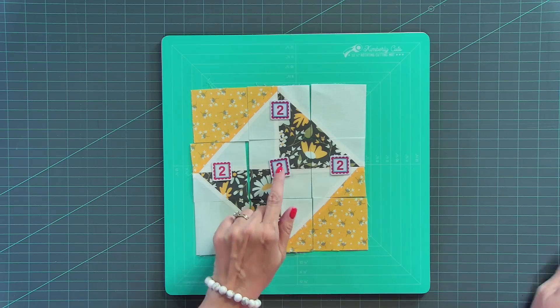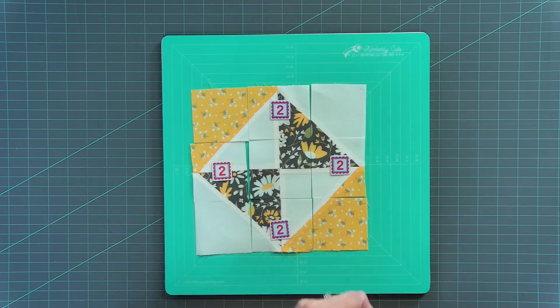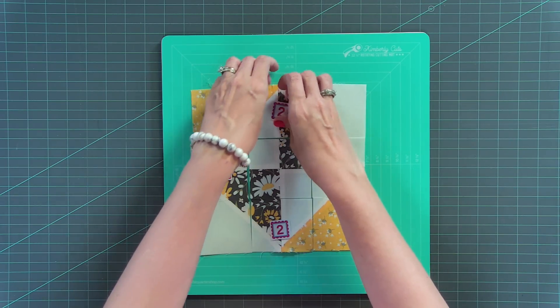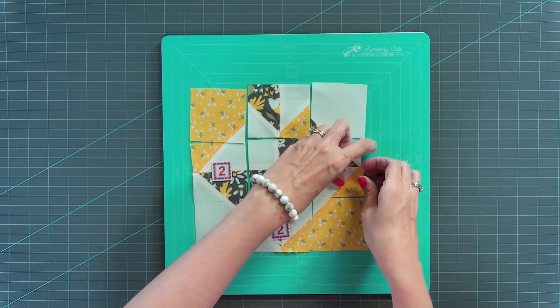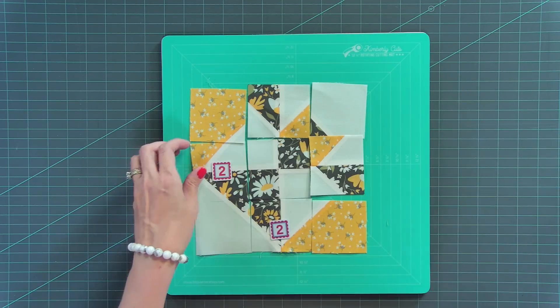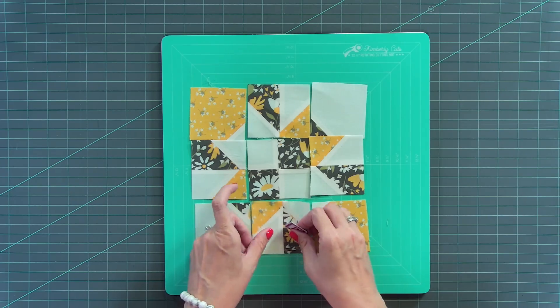So now what you're gonna do is you're gonna leave your number ones just like they are. And then you're gonna leave your number three just like it is. On your number twos, you're gonna rotate. You're gonna flip it one time. And that's gonna create the star in the center. So you rotate it 180 degrees.